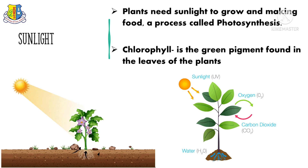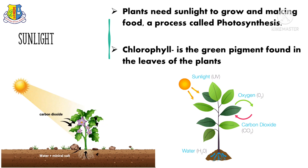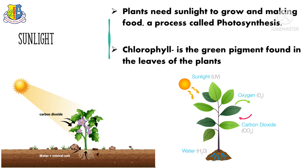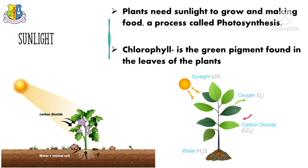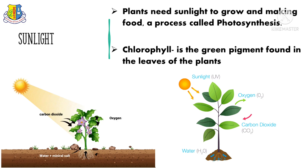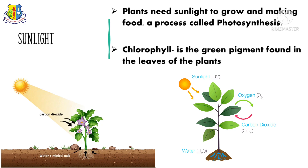Plants make their food by utilizing sunlight, carbon dioxide, and water. That's it for now. I hope you understood well. Thanks for watching — see you again in the next class. Till then, bye bye!